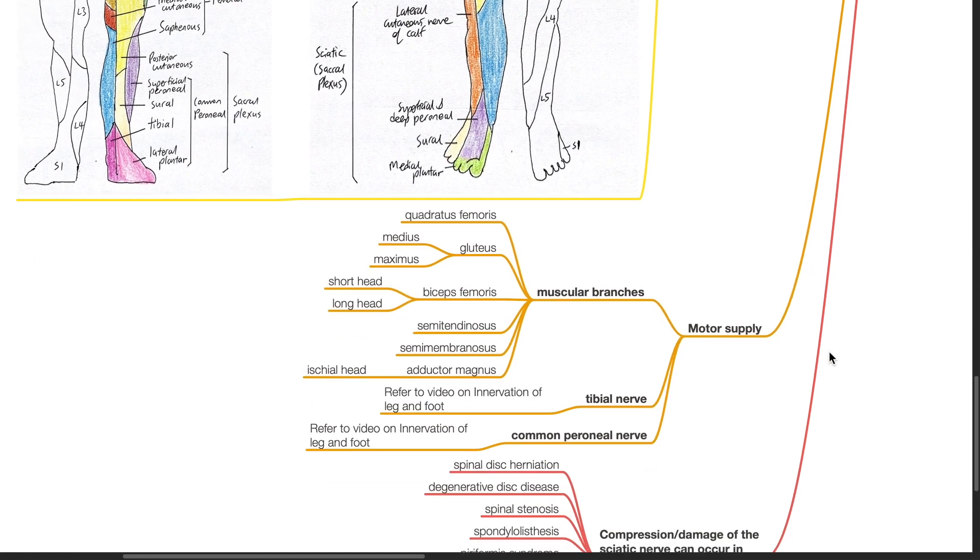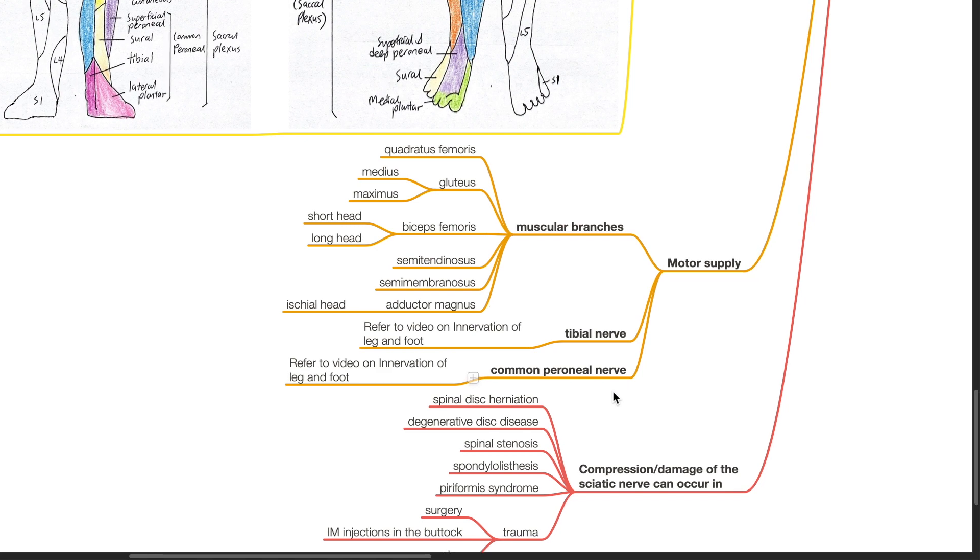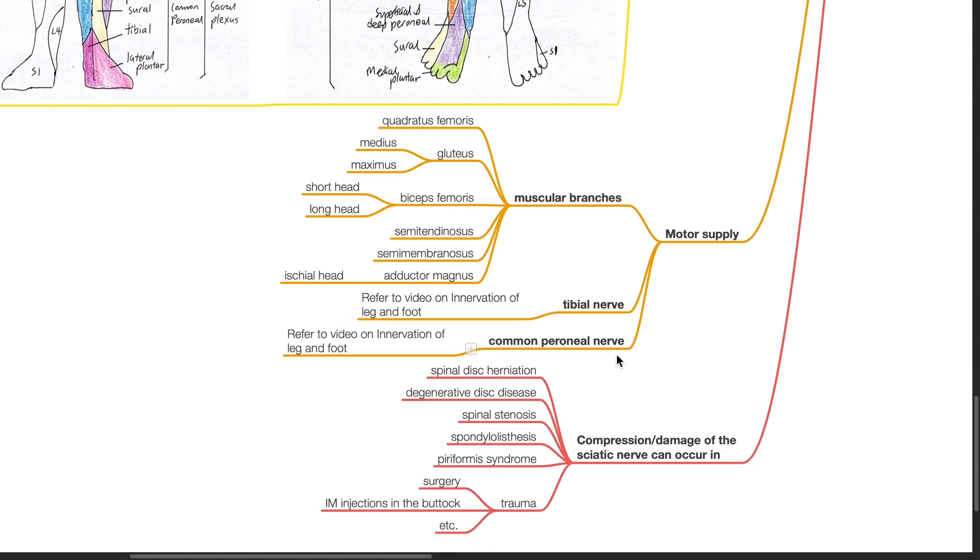Motor supply. Muscular branches of the sciatic nerve supplies the quadratus femoris, gluteus medius and maximus, biceps femoris short head and long head, semitendinosus, semimembrinosus, adductor magnus ischial head. Regarding the motor supply of the tibial and the common peroneal nerve, kindly refer to the video on innervation of the leg and foot for further details.